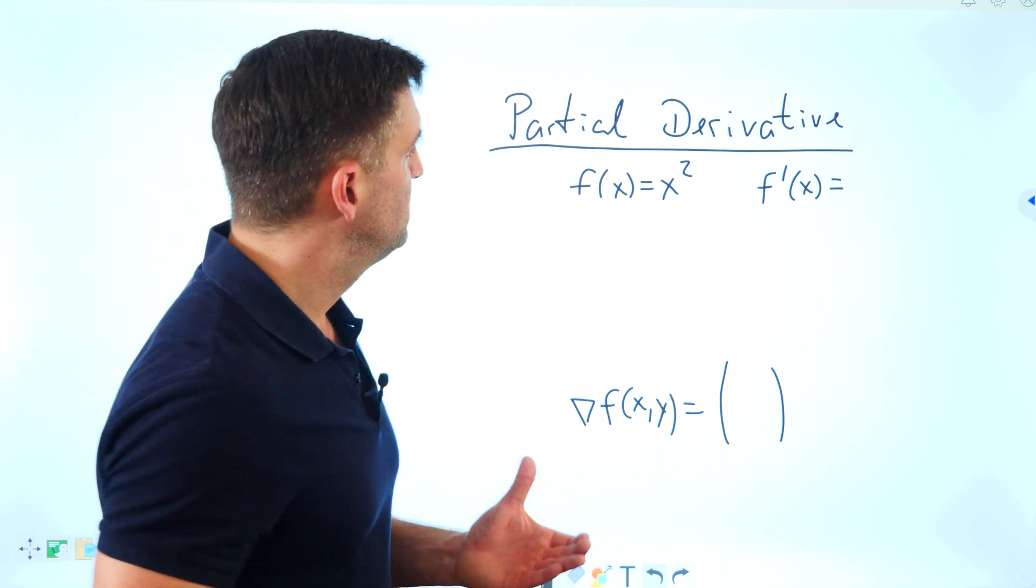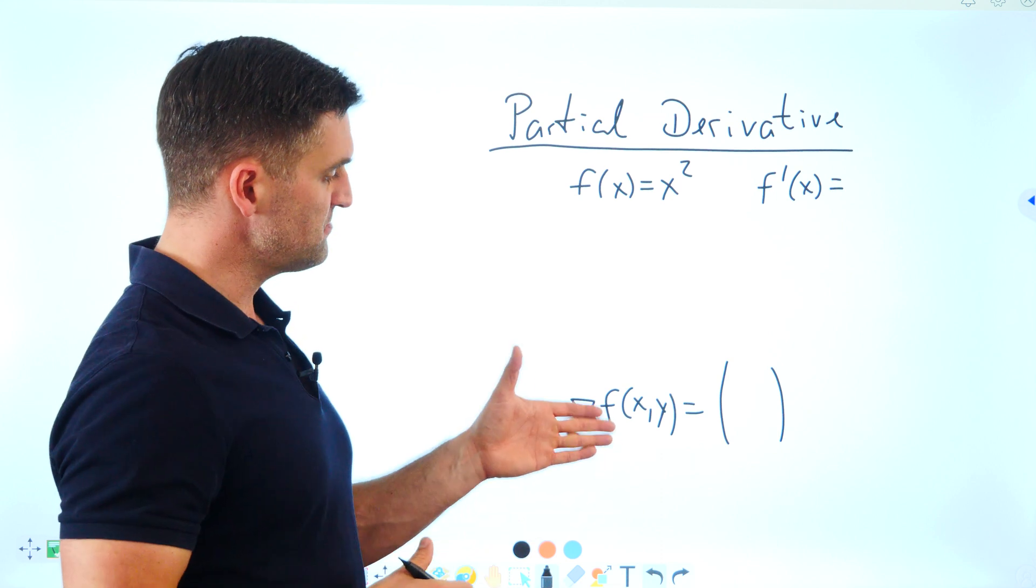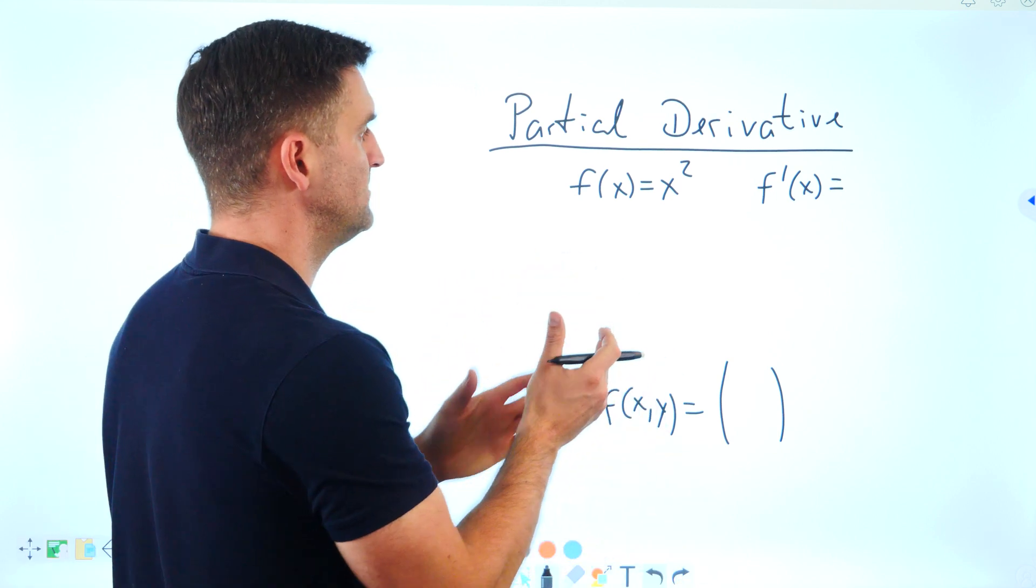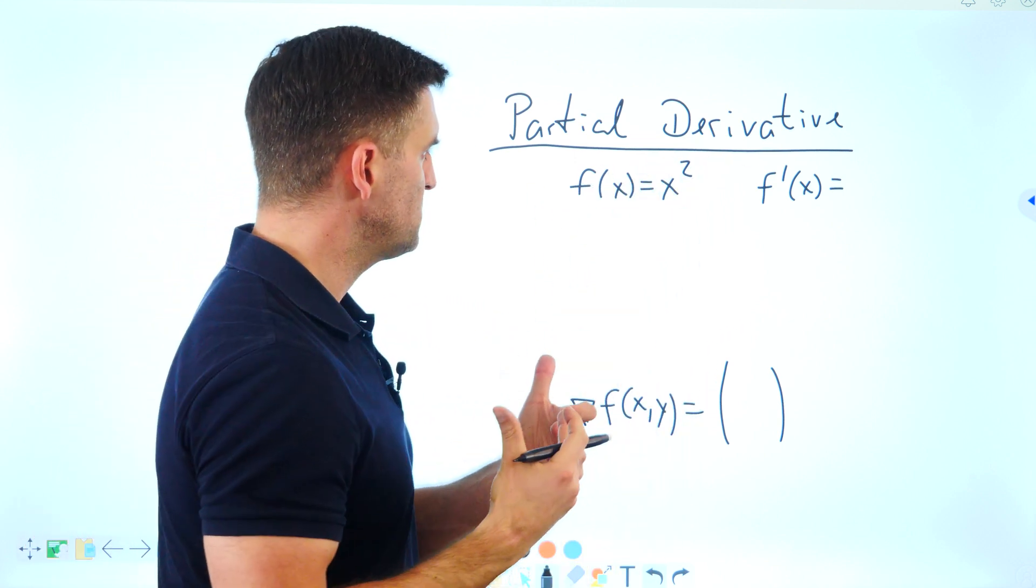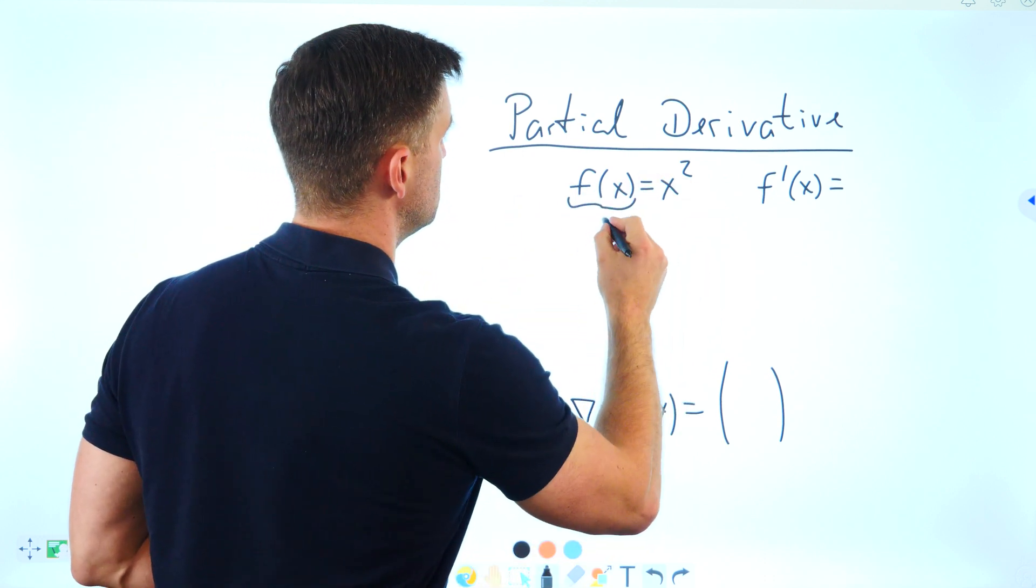Let me give you an example of partial derivatives with gradient notation at the end. Where do you come from? You come from, for example, f(x) = x². You give in some x and the outcome would be y.